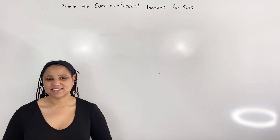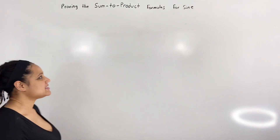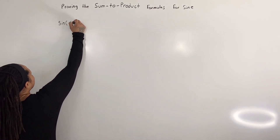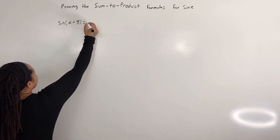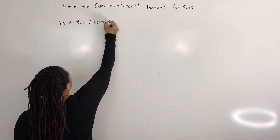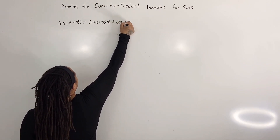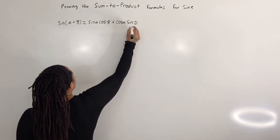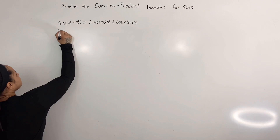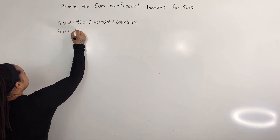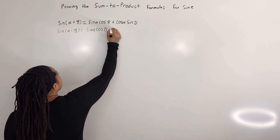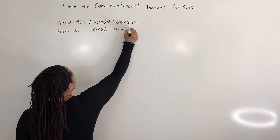We begin with the sum and difference formulas for sine. Sine of (α + β) equals sine of α cosine of β plus cosine of α sine of β. This is the sum formula for sine, and the difference formula for sine is: sine of (α − β) equals sine of α cosine of β minus cosine of α sine of β.